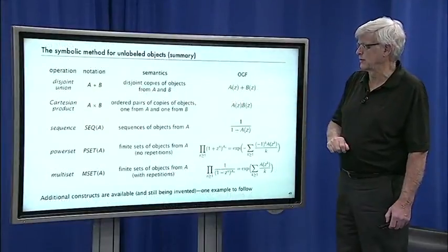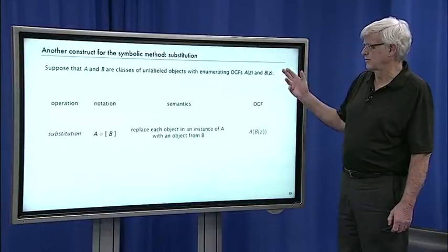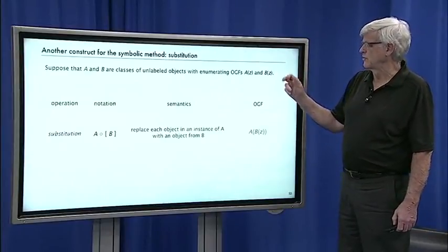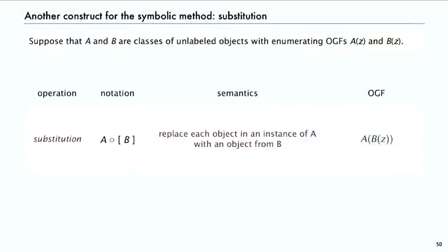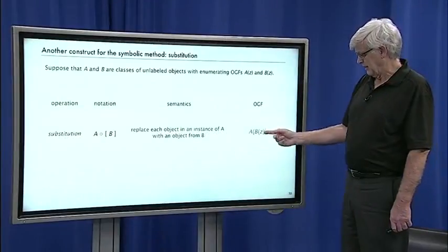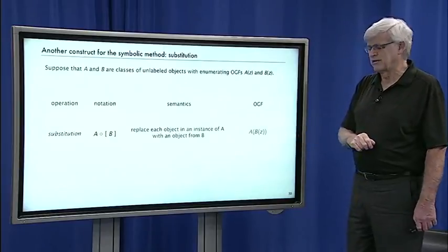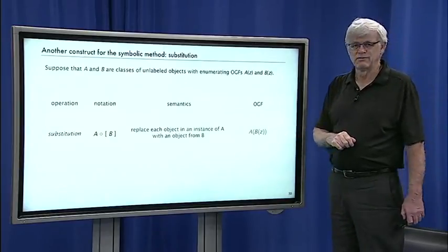I want to look at one more example called substitution. We have A and B classes and their generating functions. Substitution is written with this operation A of B in brackets. What it says is to replace each object in an instance of A with an object from B, and if you do that you get the compound generating function A of B of z.